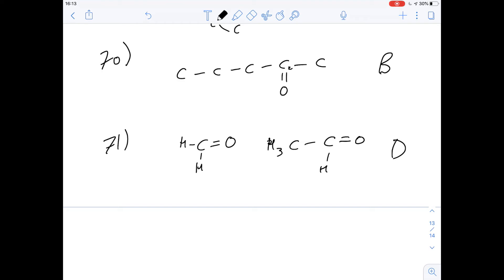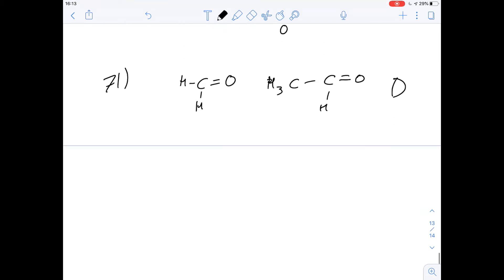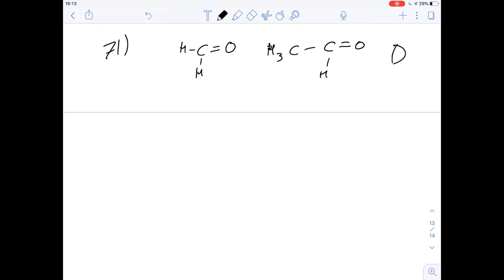72 says which one of the following statements about the reactions of alcohols catalyzed by ADH in the presence of NAD is correct? So let's go through them in turn. A says the product formed by the reaction of a primary alcohol is a ketone. So primary alcohol is an alcohol where this alcohol group is going to be on a carbon which is attached to only one other carbon.